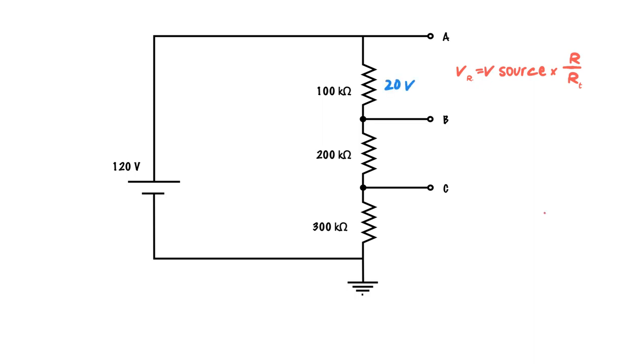In this case, I will just take, and let me just write up in my wonderful writing here. I can take the source voltage, which in this case is 120 volts. I can multiply it by 100k ohms, 100k divided by 600k. And if I do that, that's where we get the 20 volt drop from.